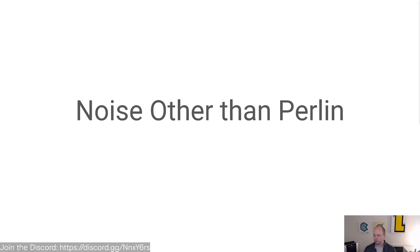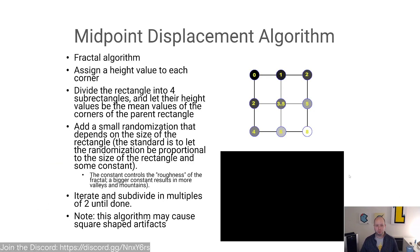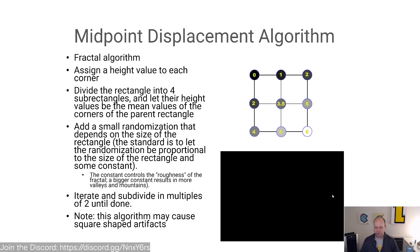There are other noise algorithms. The midpoint displacement algorithm is a fractal approach: take an area with corner points, find midpoints, add randomization based on surrounding means and a stochasticity parameter that controls roughness, then subdivide repeatedly until you reach your target resolution. The combination of mean and stochasticity gives you your final terrain character.